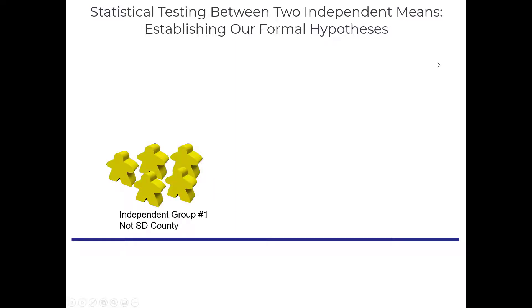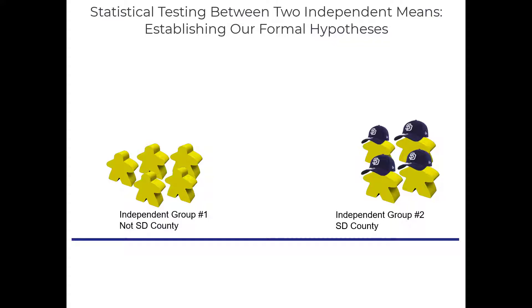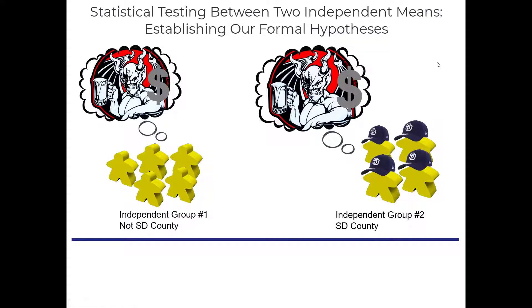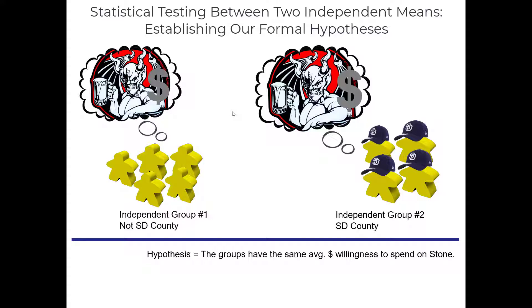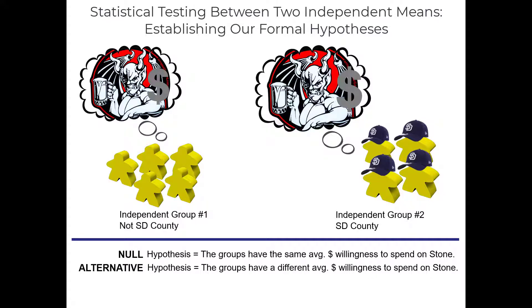Let's formalize our hypotheses. Our first independent group are those who are not in San Diego County, and the second independent group is those who are affiliated with San Diego County. Our dependent variable is the average price someone's willing to spend on a six-pack of Stone craft beer. The null hypothesis is that the groups will have the same average willingness to spend on Stone craft beer, whereas the alternative hypothesis is that members of the groups will have a different average dollars that they're willing to spend on Stone craft beer.